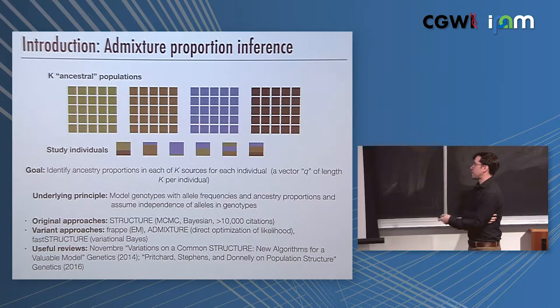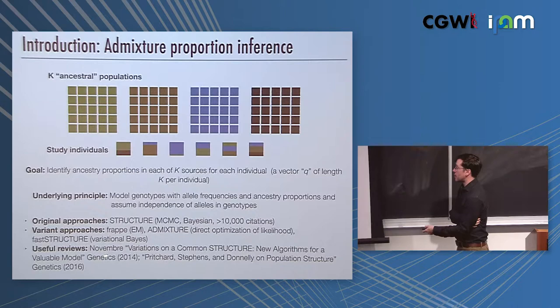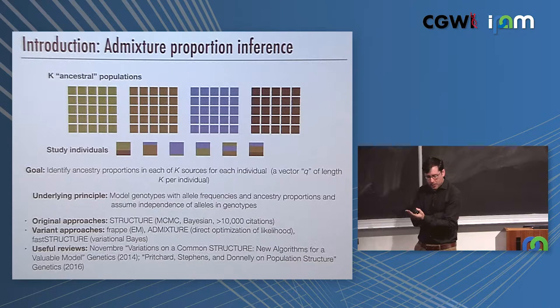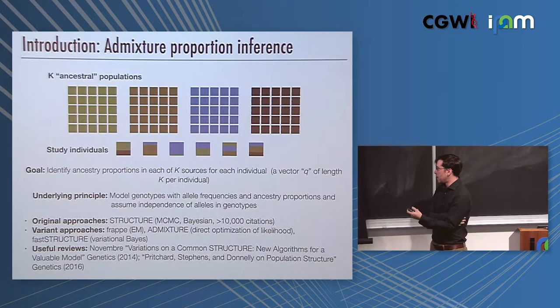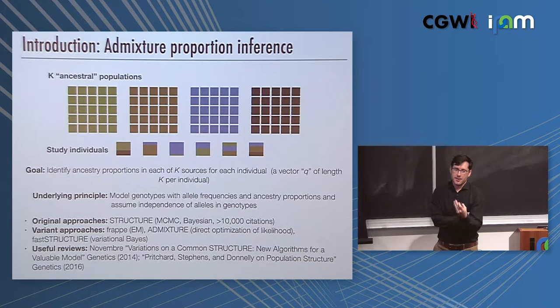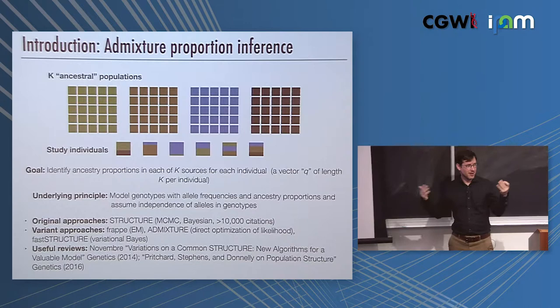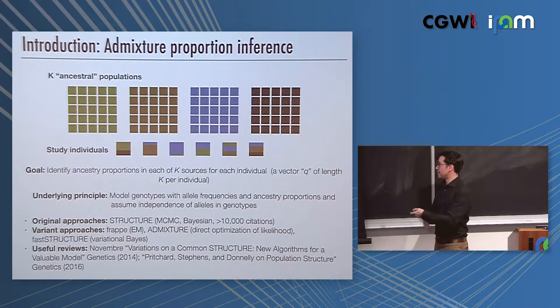This proved to be too slow for large-scale SNP data, and so there have been a number of different variant approaches developed over the years, including FRAPPE, which is an EM approach, Admixture which was developed here that uses direct optimization of likelihood, and fastStructure which is a variational Bayes approach. I'm recommending some reviews here that I've actually written recently. One side comment is, in writing this history piece about the Structure paper, the three authors met at a conference. Pritchard was on his way to be a postdoc with Donnelly. They talked about the basic ideas of Structure and sketched out the model, and it was only a few weeks later where the first implementation was done.